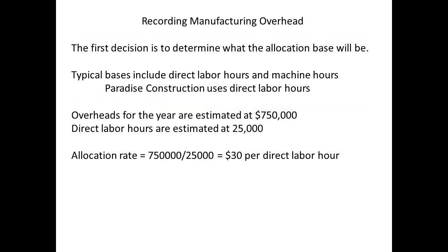The last part to be recorded is the manufacturing overhead. Any business that carries out job costing will need to determine the allocation base — in other words, what will determine the allocation. For most businesses, the choice is between using direct labour hours or using machine hours. A construction company will favour direct labour hours.